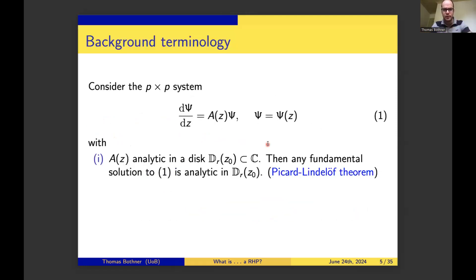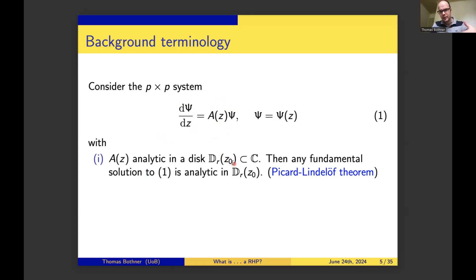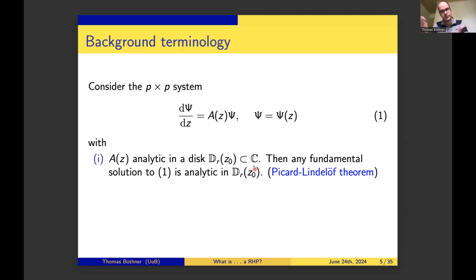Let's introduce some background terminology. We'll be dealing with P-by-P linear systems of differential equations in the complex plane. Z will always be complex, Ψ is the unknown P-by-P matrix, and A(Z) is the coefficient function. To remind you of some basic things: if you start with coefficient matrix A analytic near a point Z₀, then the method of successive iterations yields existence of a fundamental solution, also analytic at the same point. This is the Picard-Lindelöf theorem. It's actually easier to prove in a complex setting because the sequence of iterates converges uniformly—and since you have uniform convergence of analytic functions, the target is automatically analytic as well. That's not the case on the real line.